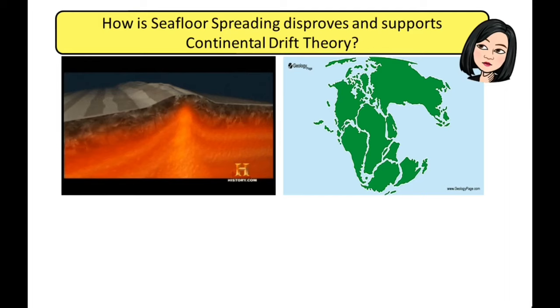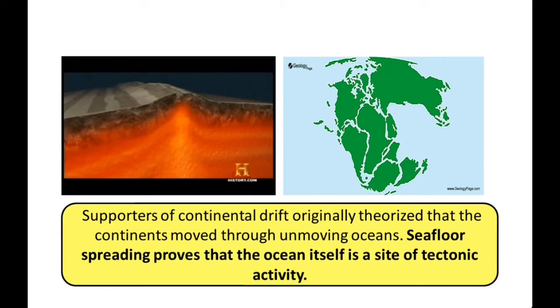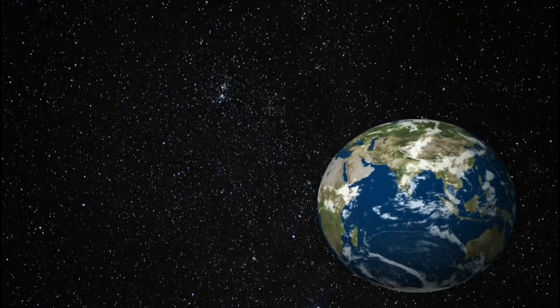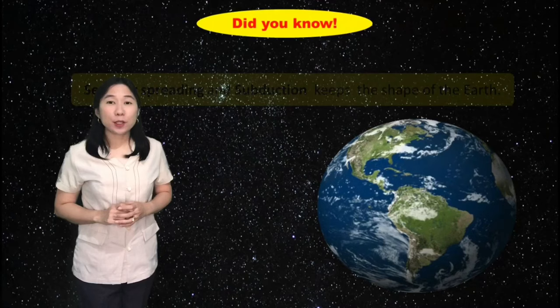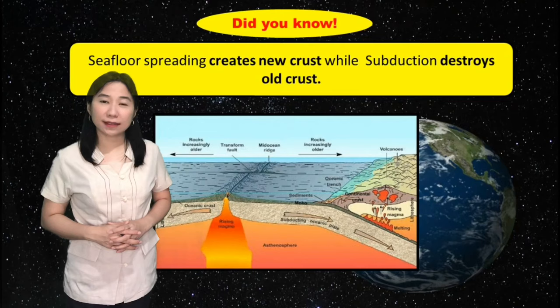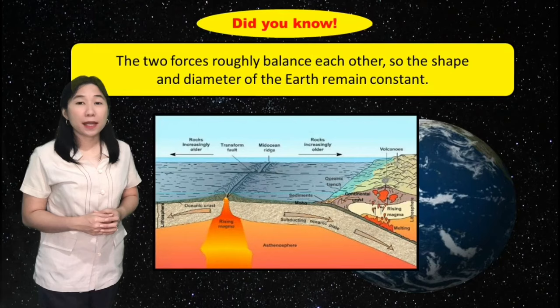How does seafloor spreading disprove and support continental drift theory? Supporters of continental drift originally theorized that the continents move through unmoving oceans. Seafloor spreading proves that the ocean itself is a site of tectonic activity. Seafloor spreading and subduction together keep the shape of the Earth: seafloor spreading creates new crust while subduction destroys old crust. The two forces roughly balance each other so the shape and diameter of the Earth remain constant.